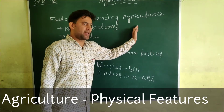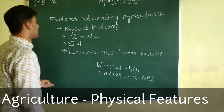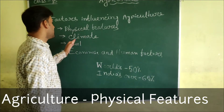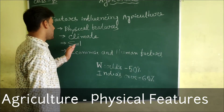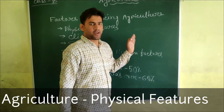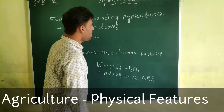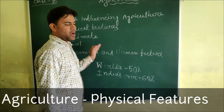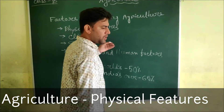Now it is less than 65%. As a primary activity, there are a few factors that influence agricultural activity: first is land, then climate, then soil, then economic and human factors.